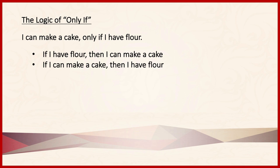To decide which of these is correct, let's assume that it's true that I can make a cake only if I have flour. What about the first possible translation — if I have flour, then I can make a cake? Is that true? Not necessarily. If flour is the only thing I have, then I can't make a cake; flour is just one of the ingredients necessary. However, think about the second possible translation: if I can make a cake, then I have flour. That's certainly true.